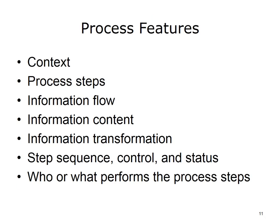The process aspects to be featured will determine the type of diagram to be used — the diagram that best represents the process aspects that you are interested in. The seven important process aspects are: Context, Process Steps, Information Flow, Information Content, Information Transformation, Sequence and Other Control, and Who or what role performs the step. The table on the following slide indicates which process aspects are covered by each notation or diagramming method.